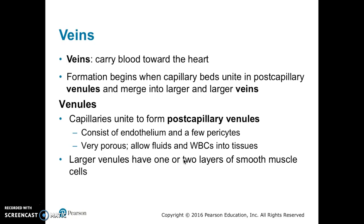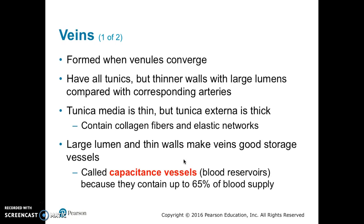Now we move to veins. Veins carry blood towards the heart after the capillary bed. Post-capillary venules merge into larger and larger veins, starting with the venules. Capillaries unite to form post-capillary venules, which are made up of endothelium and a few pericytes; they are very porous and allow fluids and white blood cells into the tissues. Larger venules have one to two layers of smooth muscle cells. Veins form when all these venules converge and have all the tunics but with thinner walls and larger lumens compared to corresponding arteries.